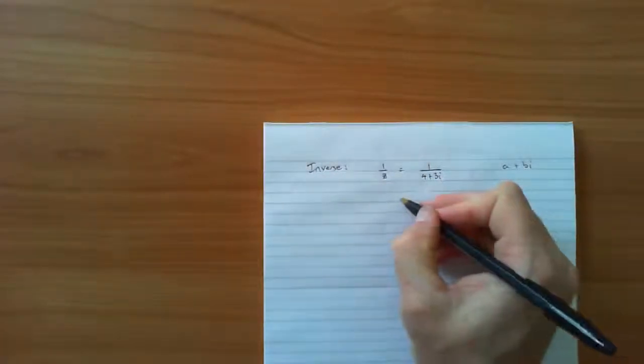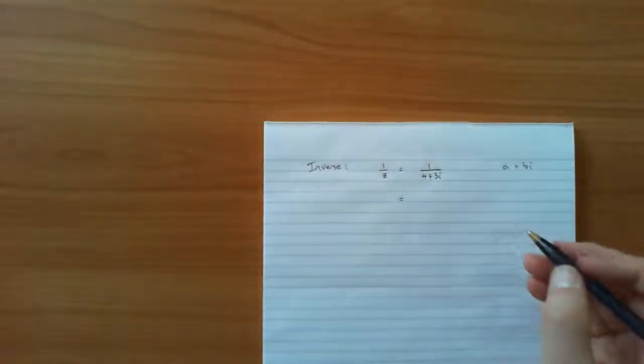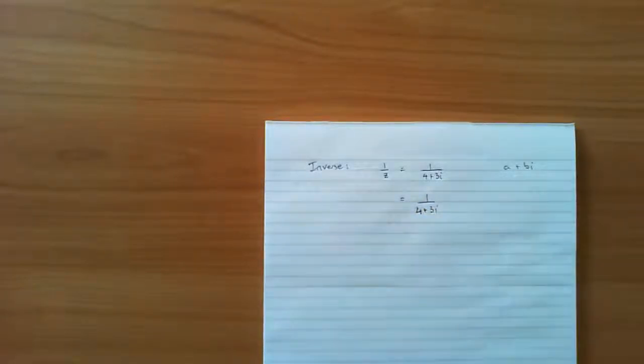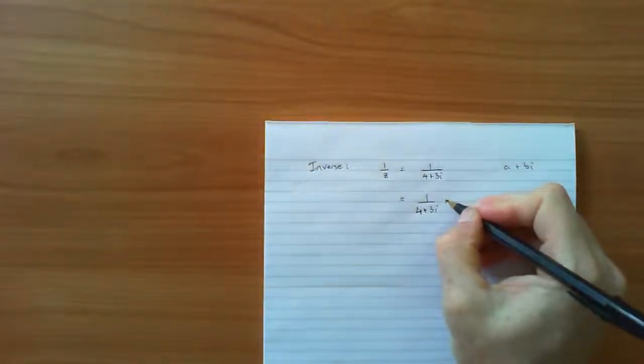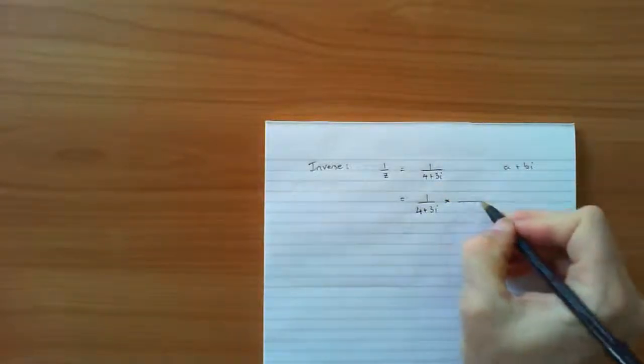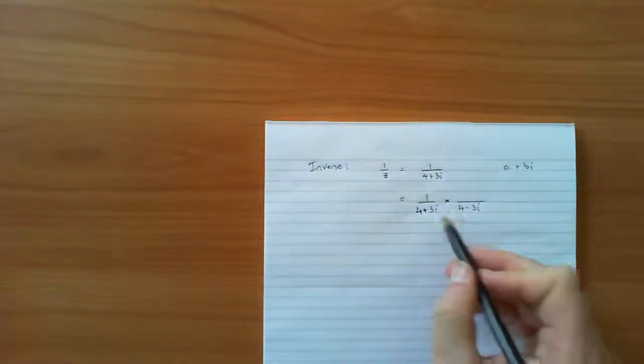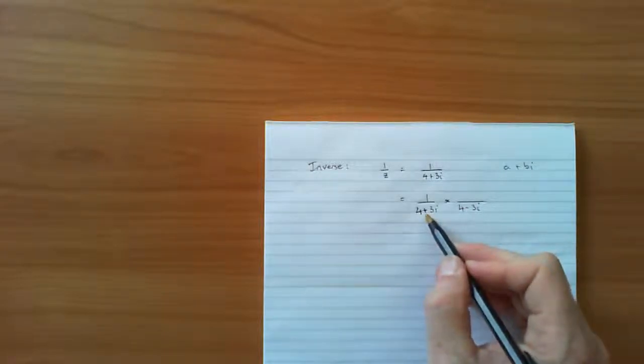So we use a trick here, and it relies on some maths you would have done much earlier in high school. So we'll take 1 over 4 plus 3i, and we know that with fractions, whatever we do to the top we do to the bottom and we won't have changed the value of the fraction. Now I'm going to multiply top and bottom here by 4 minus 3i, the conjugate.